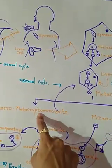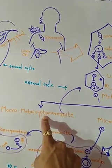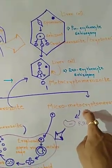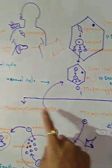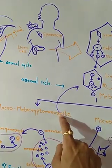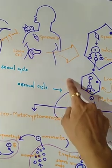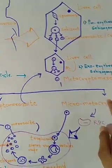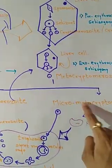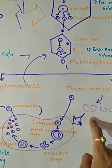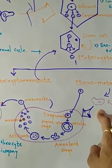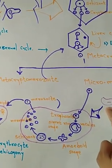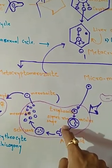The two parts are the macrometacryptomerozoite and the micrometacryptomerozoite. The micrometacryptomerozoite again goes to the liver cell and continues this process, but the macrometacryptomerozoite enters into the RBC — the red blood cell — of the human blood. Let us zoom out the RBC cell.